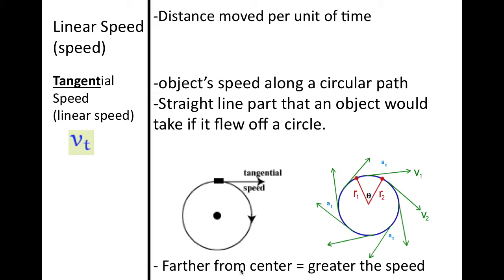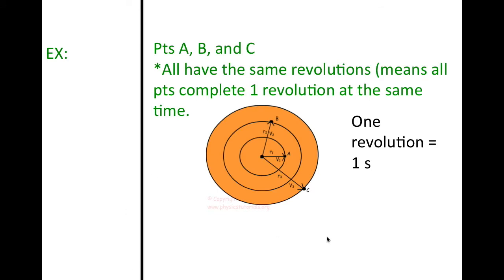One other thing: farther from the center, the greater your speed. Here we have an object with three points — A, B, and C respectively — A being the closest to the center, B being the furthest. They all have the same revolutions, meaning all points complete one revolution at the same time. Let's say one revolution takes one second: point A, B, and C all go around in one second.